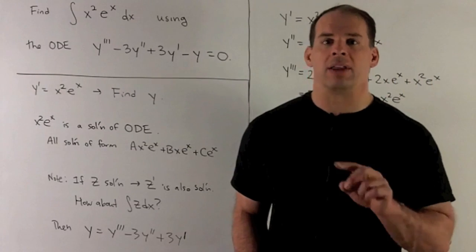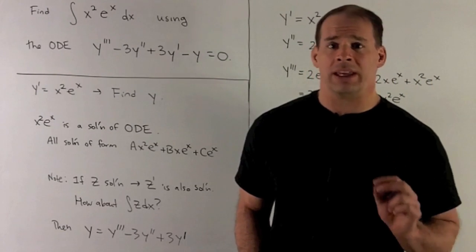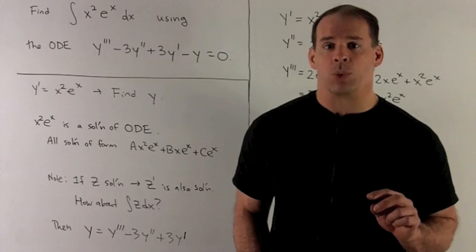If we work out the characteristic polynomial for this ODE, it's just going to be r minus one cubed.